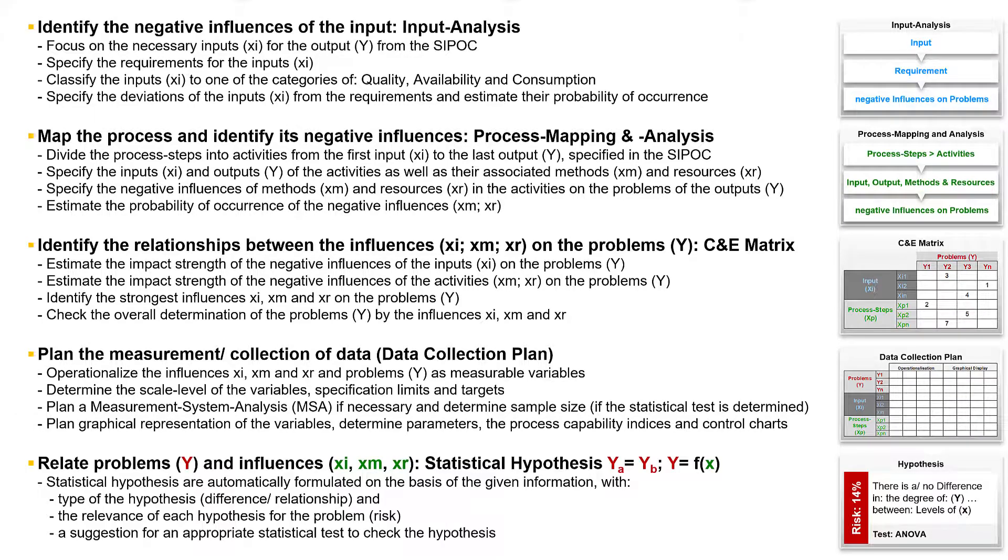Finally, we transfer the relationships between the problems and their influences into the framework of statistical hypotheses. SigmaGuide automatically formulates these statistical hypotheses based on the given information. SigmaGuide also calculates the relevance of each hypothesis for the problem as risk, and suggests an appropriate statistical test to check the hypothesis.